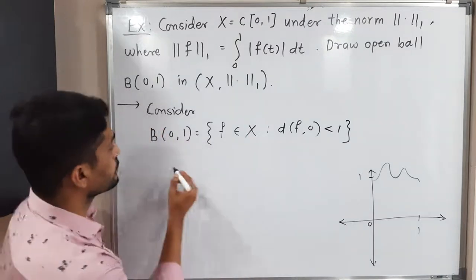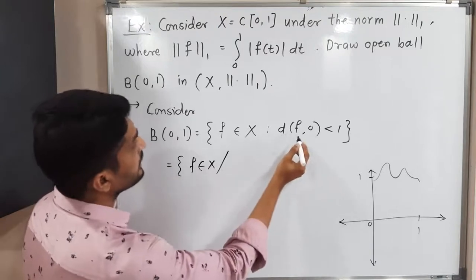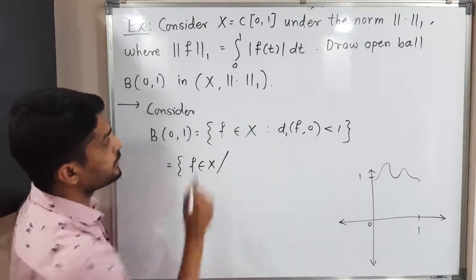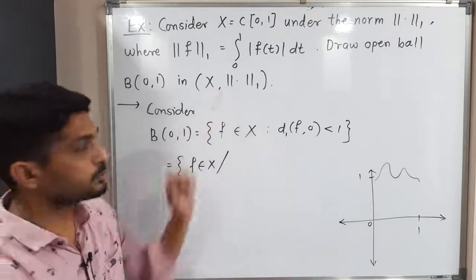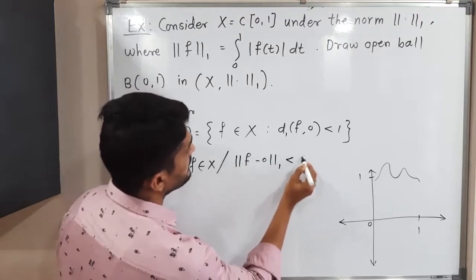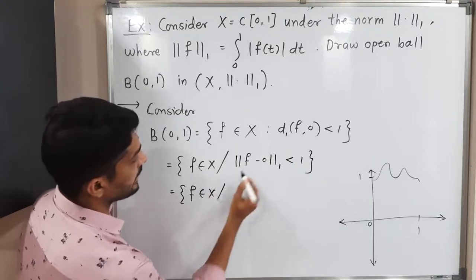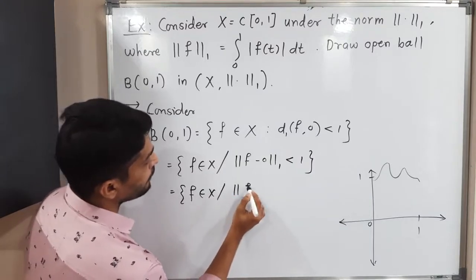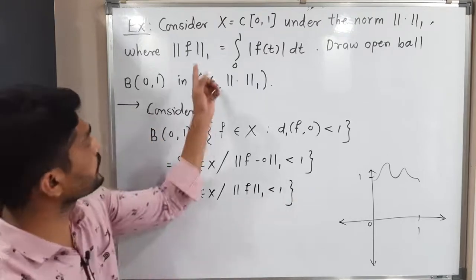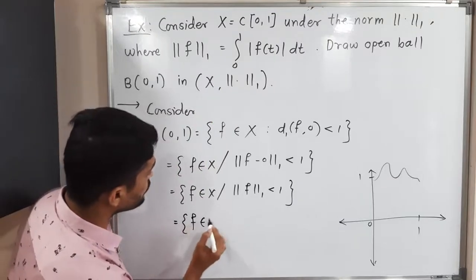So this is equal to: F belongs to X such that the metric D — we call it D1, the induced metric by norm-1 — satisfies ‖F − 0‖₁ < 1. Subtracting, this becomes ‖F‖₁ < 1. Now we follow the definition of norm-1.